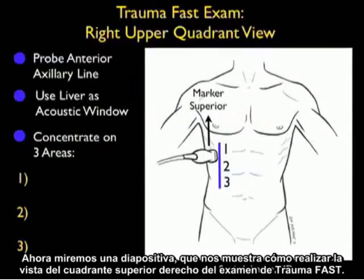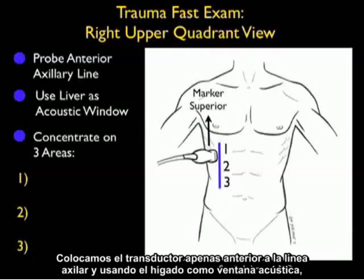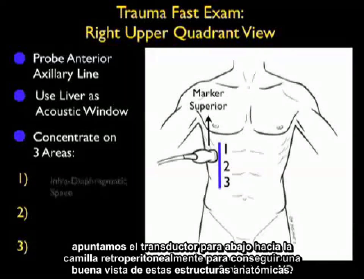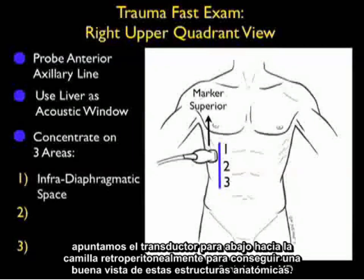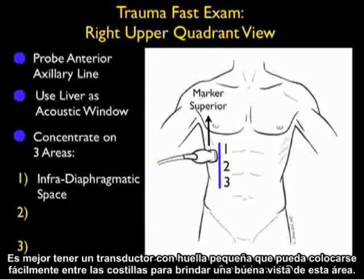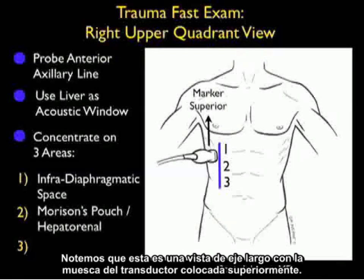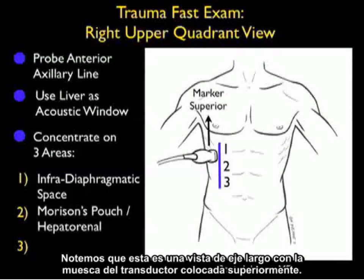Let's take a look at a slide showing us how to perform the right upper quadrant view of the trauma FAST exam. We'll want to place the probe at about the anterior axillary line, using the liver as an acoustic window and aiming the probe down towards the bedside retroperitoneally to get a good view of these anatomical structures. It's best to have a small footprint probe that can easily sit between the ribs. Notice that this is a long axis view with the probe marker positioned superiorly.